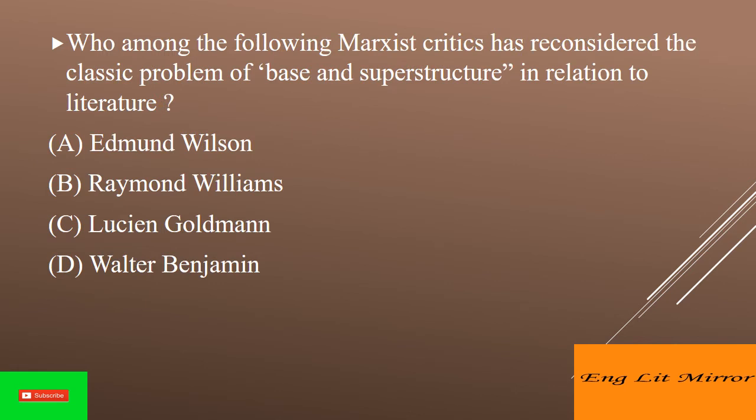Who among the following Marxist critics has reconsidered the classic problem of base and superstructure in relation to literature? The answer is Option D: Raymond Williams. Raymond Henry Williams was a Welsh Marxist theorist, academic novelist, and critic, influential within the New Left and in wider culture. His writings on politics, culture, the media, and literature made a marked contribution to the Marxist critique of culture and the arts.